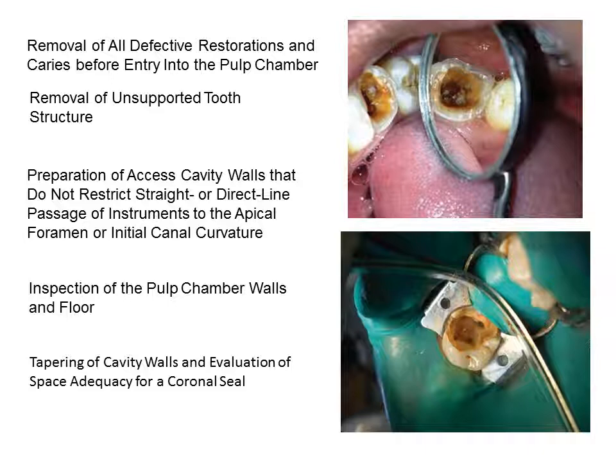Removal of all the restoration and defective caries is a very important step. Removal of unsupported enamel is important too, to have a diverged cavity. We should prepare the cavity to have a straight line for the passage of root canal instruments. Inspection of the pulp chamber wall and floor with a probe is important. Tapering the cavity wall and evaluating space adequate for the coronal seal are also required.